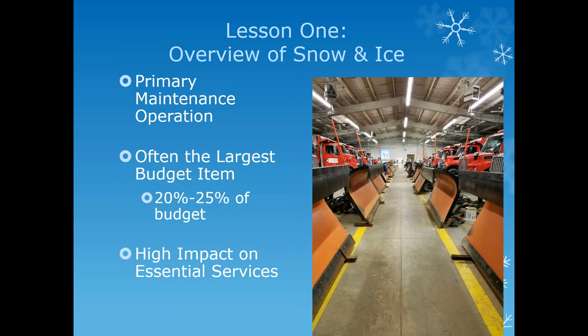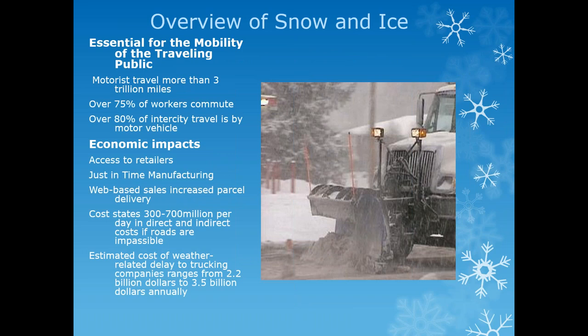Snow and ice operations are typically our primary maintenance operation, consuming 20 to 25 percent of our budget. The traveling public drives more than 3 trillion miles a year — 75 percent of us commute to and from work, and 80 percent of intercity travel is on our highway system. Shutting down roads due to snow and ice has enormous economic consequences, affecting retailers, grocery stores, and manufacturers operating on just-in-time systems. Honda at Marysville, for example, calls ODOT when it snows to ensure their supply roads are clear.